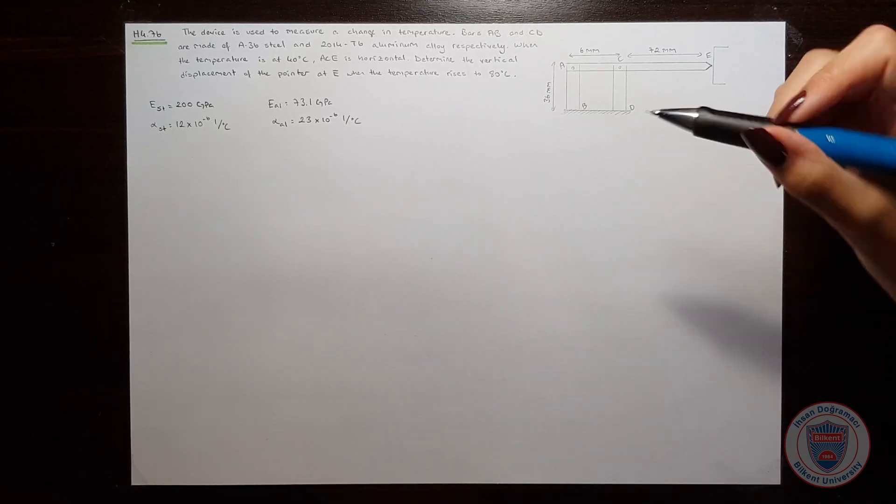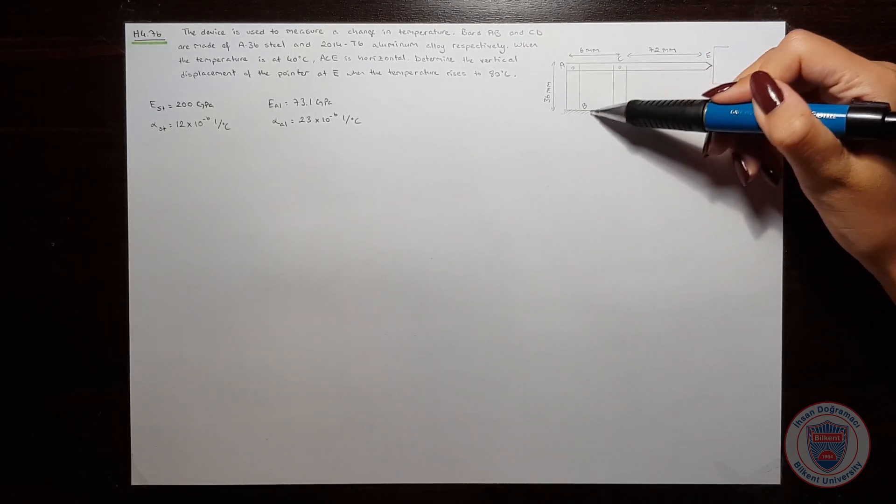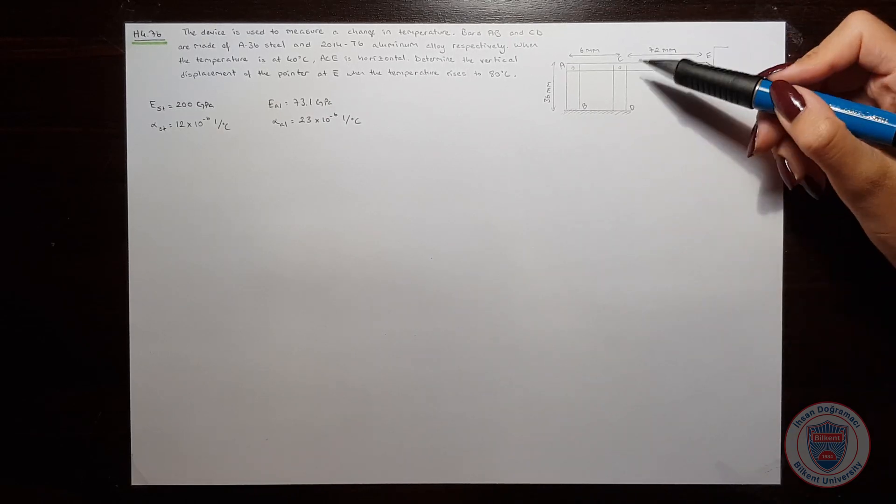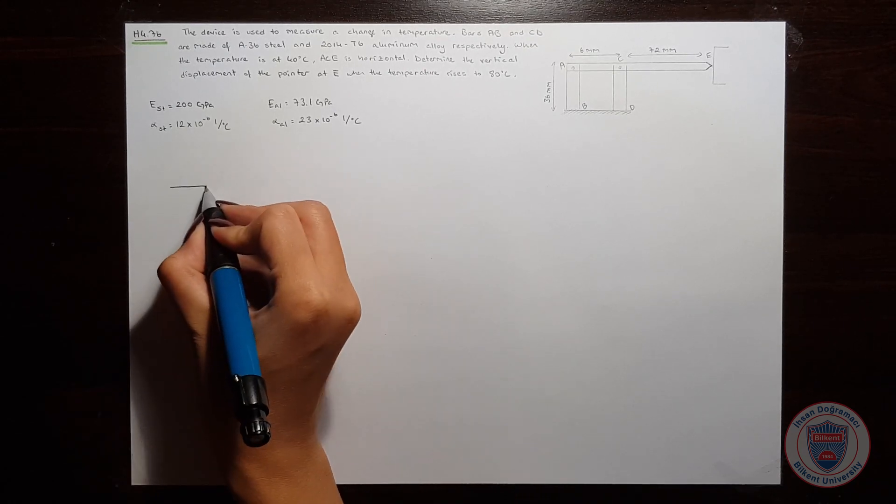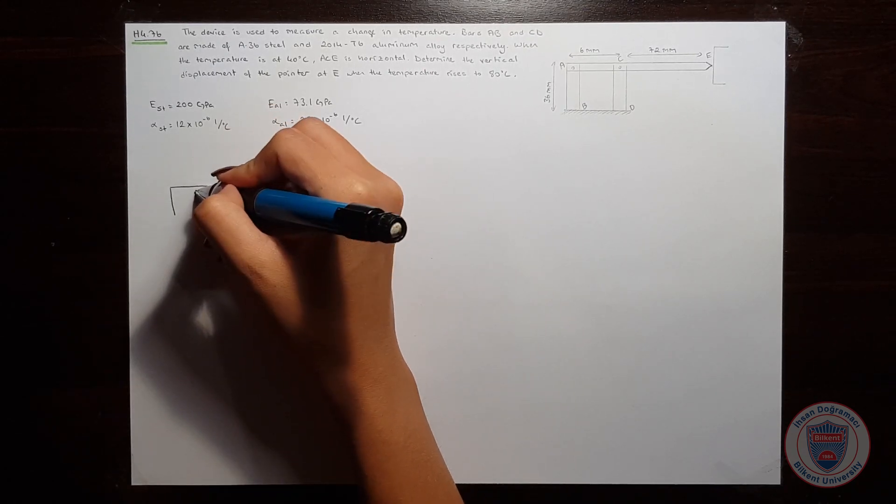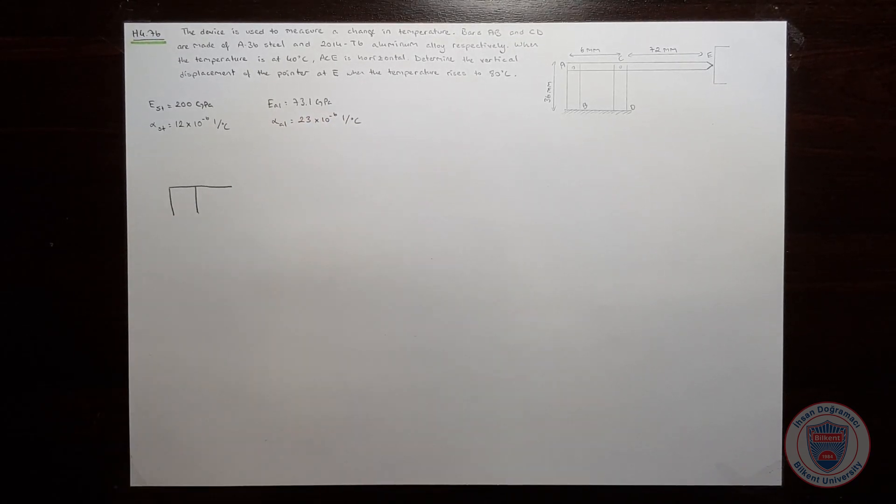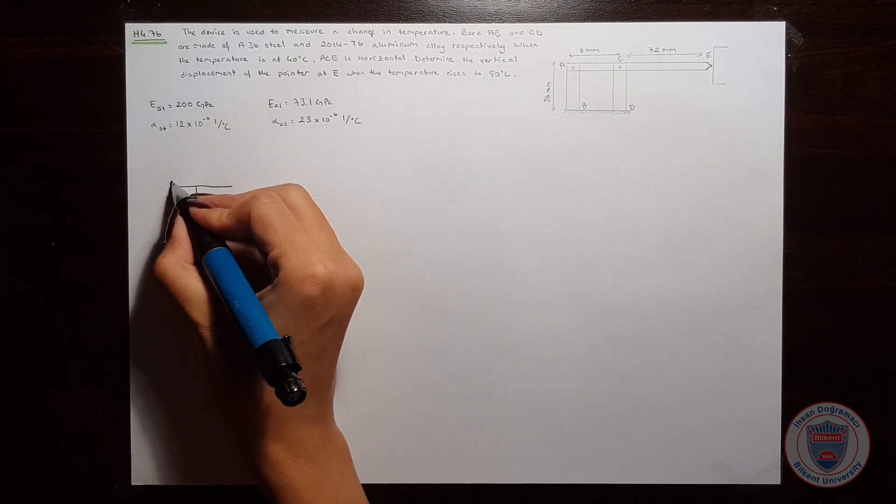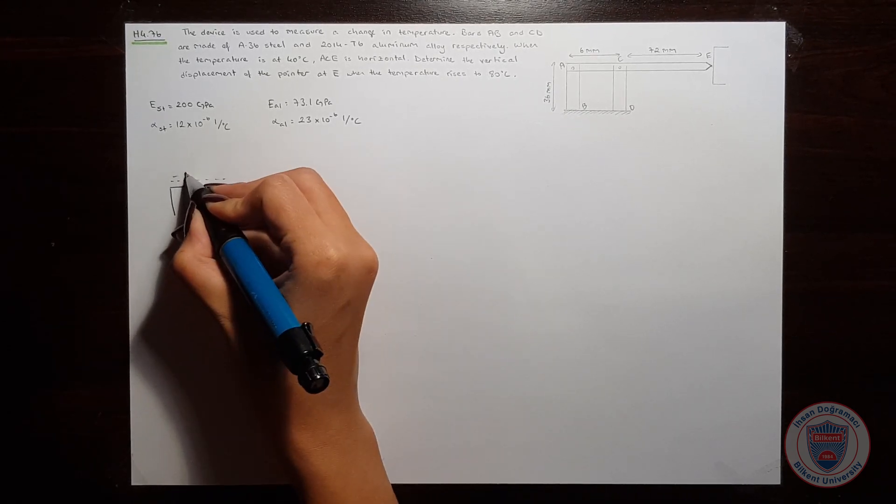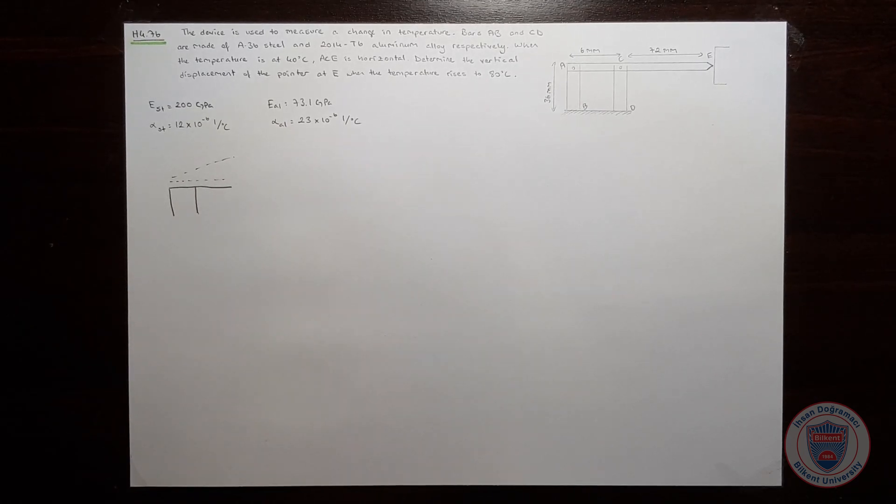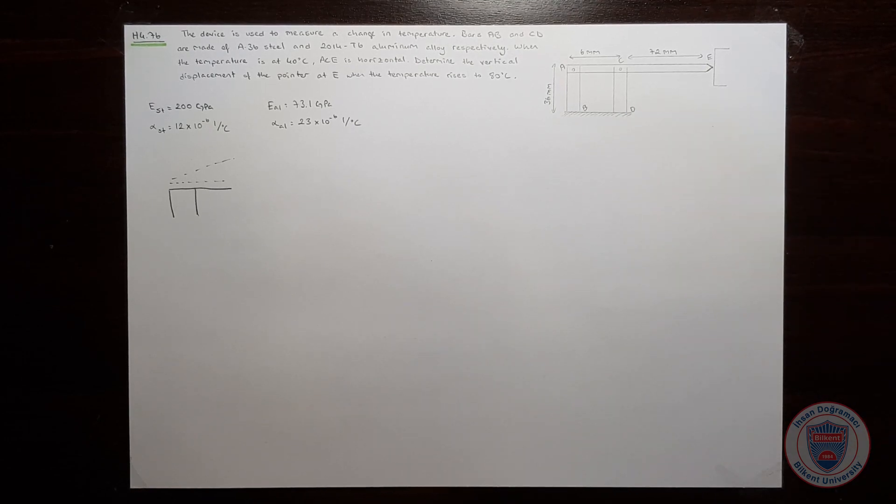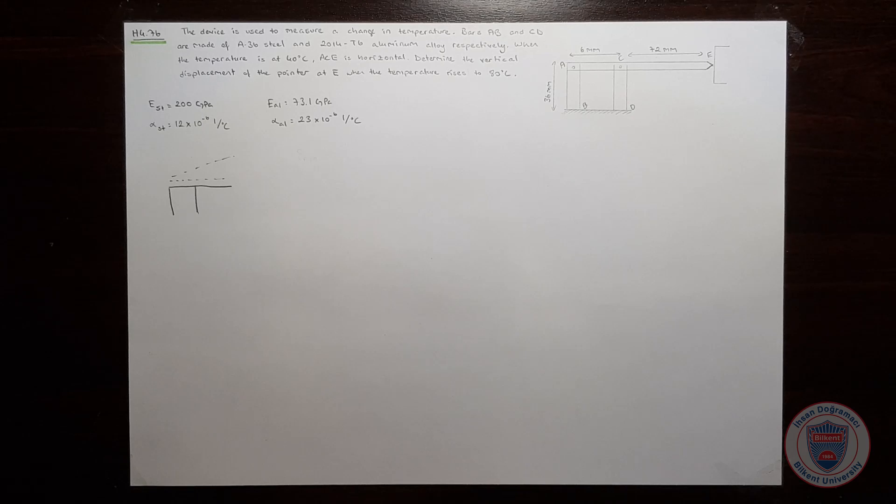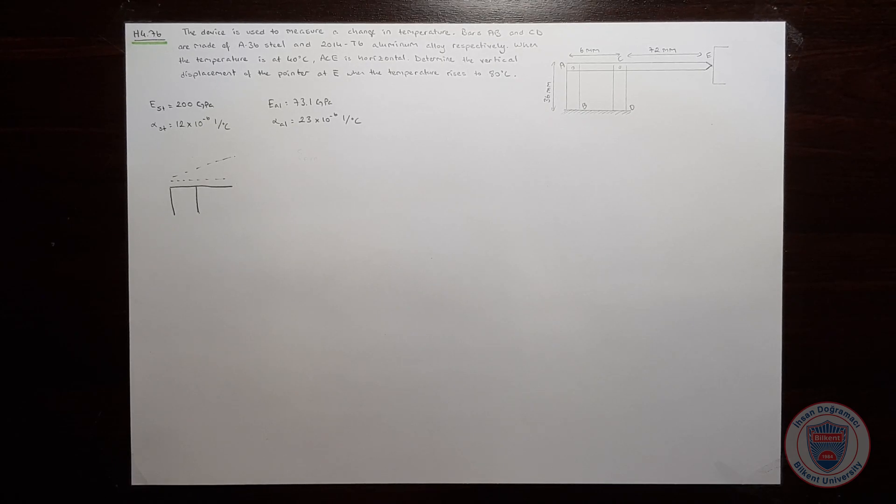We will first find the displacement of bar AB and then the displacement of bar CD. Let's suppose this is the device when it is horizontal. And when we increase the temperature, it will look like this, because since the alpha is bigger for the rod CD, it will expand more. So let's calculate the displacement of bar AB.